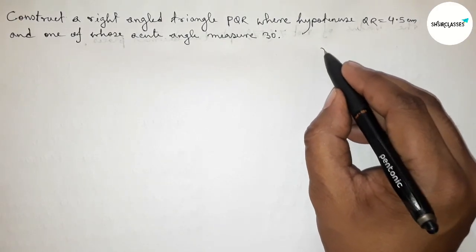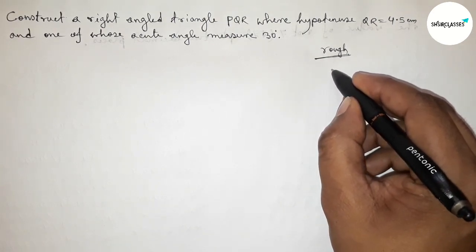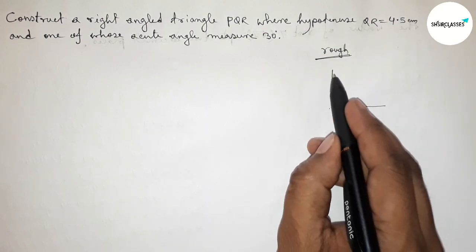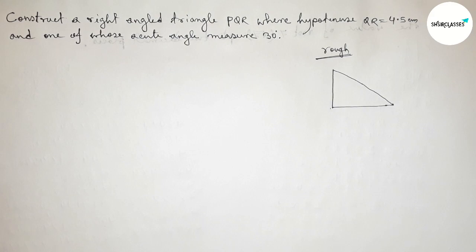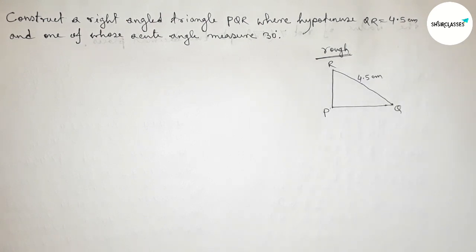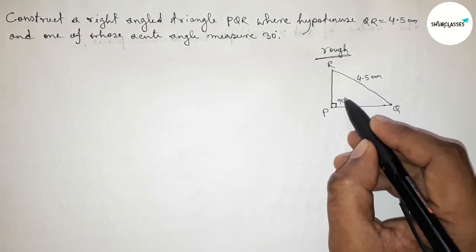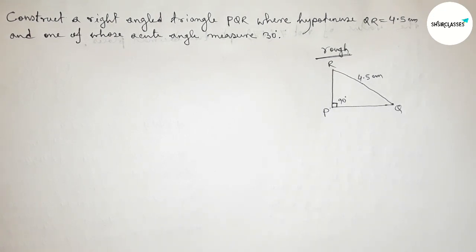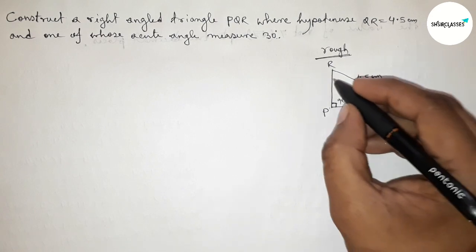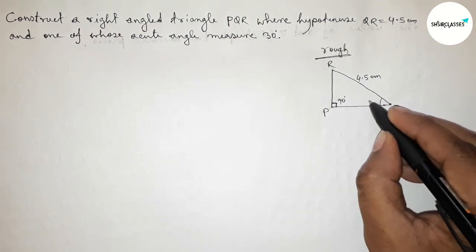First, roughly discussing some important calculations. Drawing a rough right-angle triangle, taking points Q, R, and P. Here QR equals 4.5 centimeters. We know that the angle opposite to the hypotenuse of a right-angle triangle is always 90 degrees, so angle P is 90 degrees. Given one acute angle measures 30 degrees, I am taking angle Q equals 30 degrees.